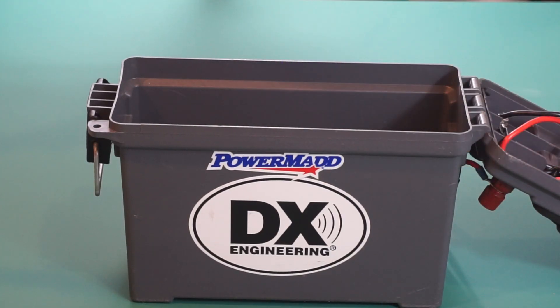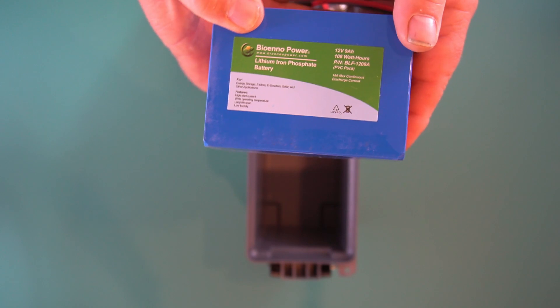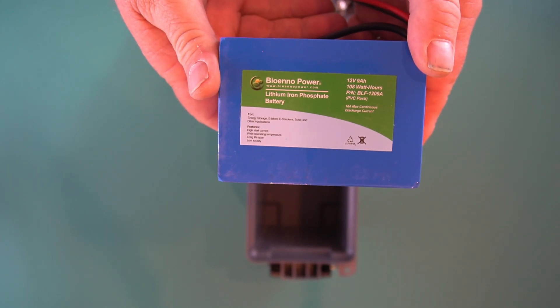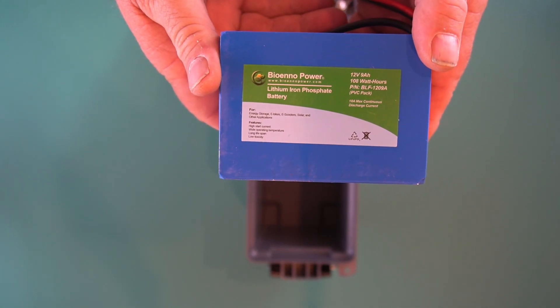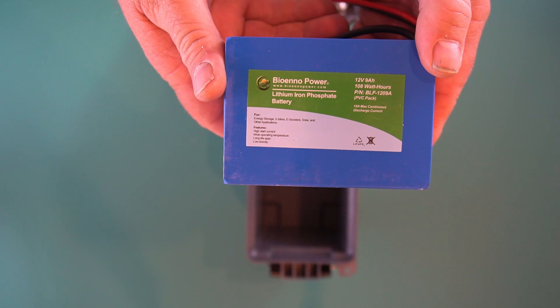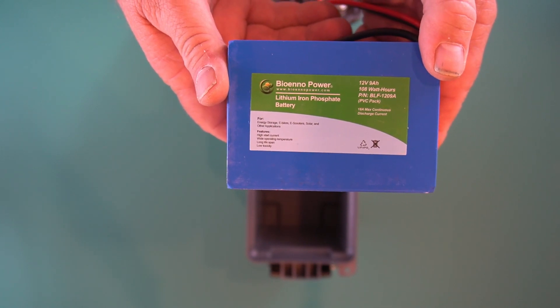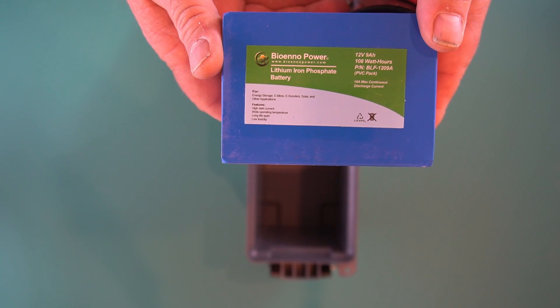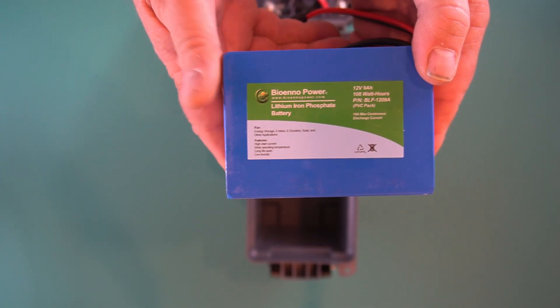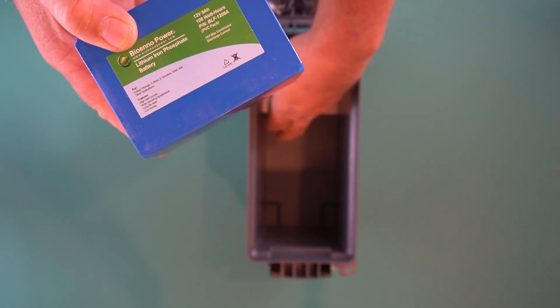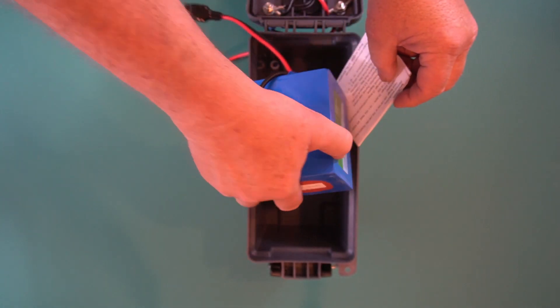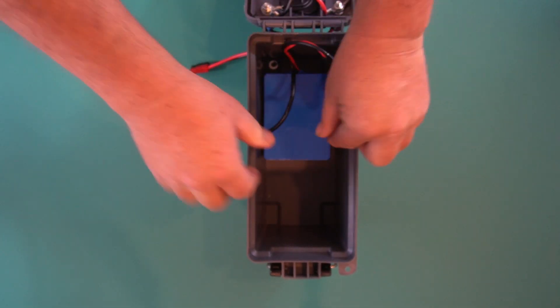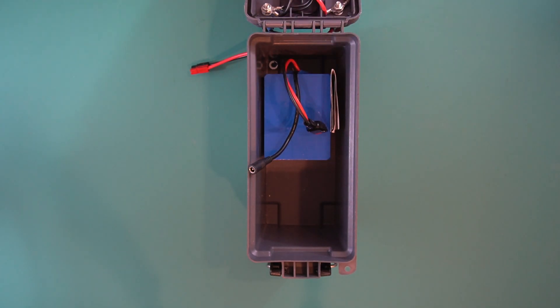Then I have this, this is the Bioenno battery 9 amp hour. I've run this thing for one day. I tested it six hours, it was still at 13.1 volts. I ran anywhere from 50 to a hundred watts out.